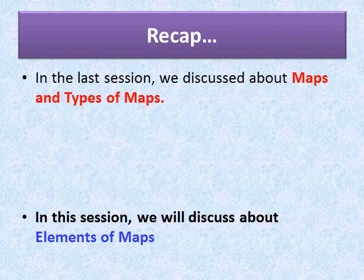On the basis of content, maps can be classified into physical maps and cultural maps. Physical maps show physical features like relief, geology, soil, drainage, weather, and vegetation — including regional relief maps, geological maps, climatic maps, and soil maps. Cultural maps contain man-made features such as political maps, population maps, economic maps, transportation maps, and thematic maps. The science of map making is called cartography, and one who draws maps is a cartographer. There are also digital maps, which are web-based services providing detailed information about geographical regions and sites around the world.